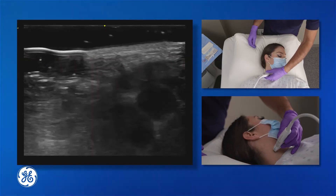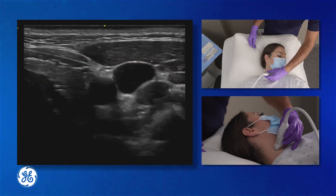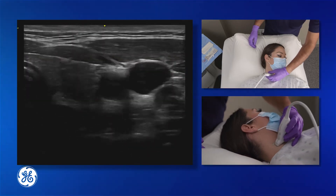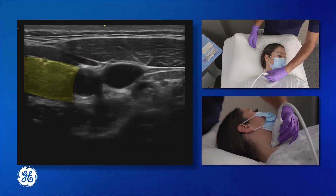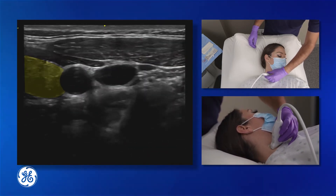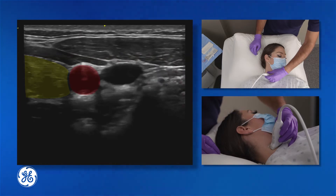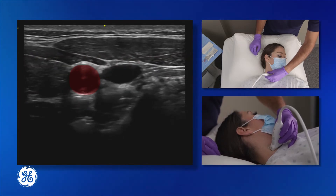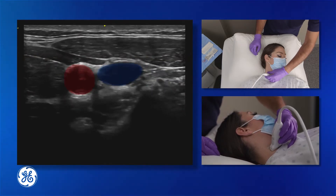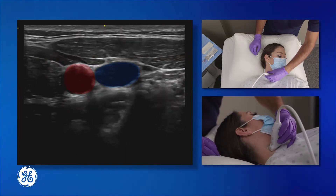We start out by scanning the patient's neck. Adjacent to the thyroid gland is the carotid artery and the internal jugular vein.